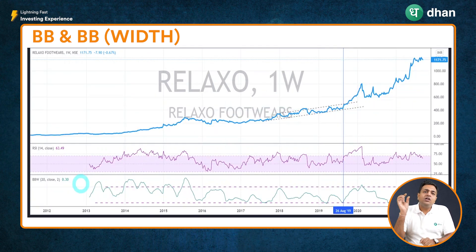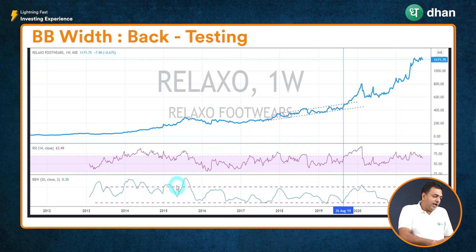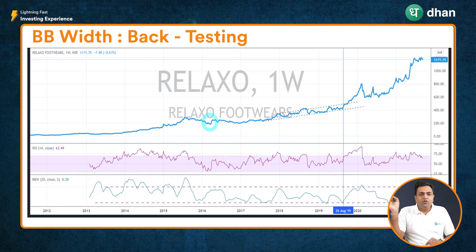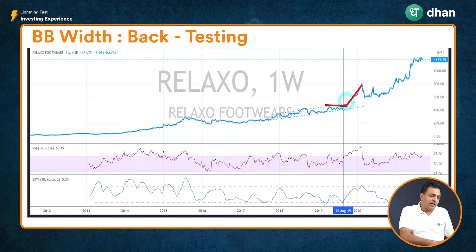The Bollinger Band Width is not only useful for identifying squeezed portions — it also helps with backtesting, since history repeats itself. I have drawn two dotted lines here to signify the zone within which the Bollinger Band Width is fluctuating. Whenever the Bollinger Band Width is on the higher side, the stock normally gets corrected, as a period of high volatility is followed by low volatility. Similarly, whenever the Bollinger Band Width is on the lower side — implying a squeezed band — you would typically see a good price action and a strong uptrend, presenting a good trading opportunity.